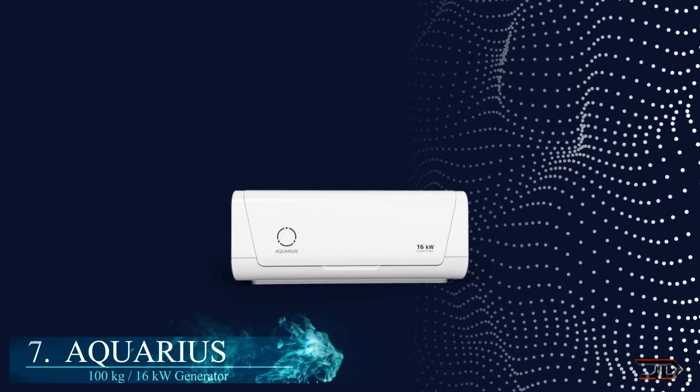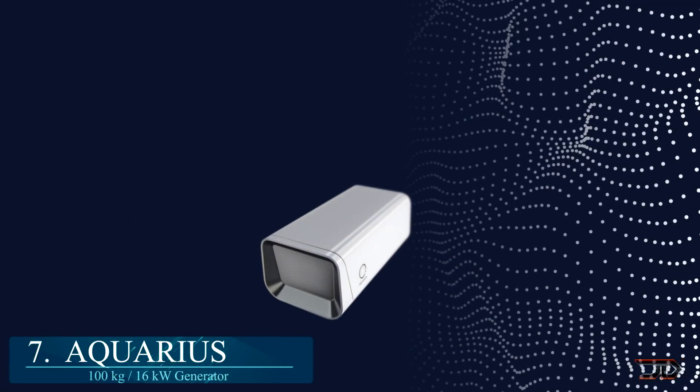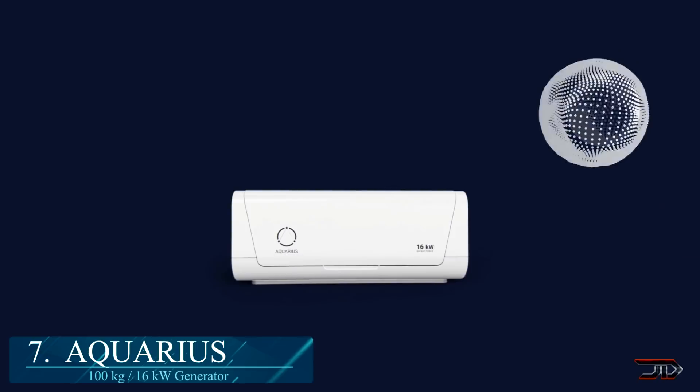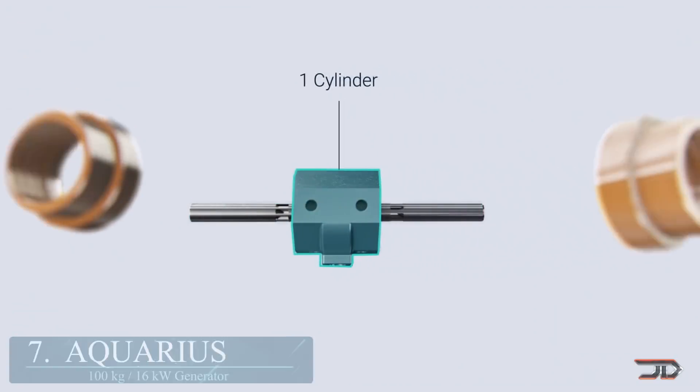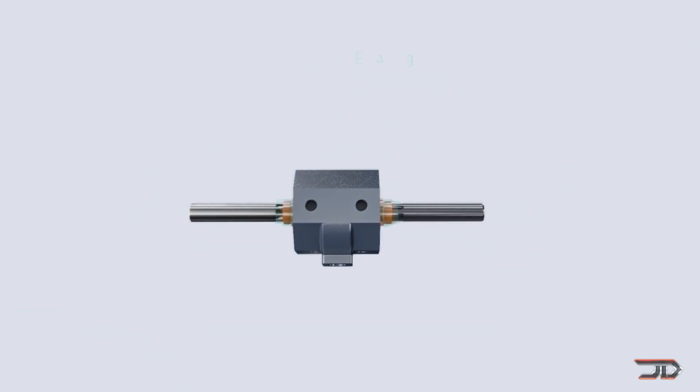At number 7, the Aquarius Generator. This Israel-based company has developed a very impressive two-sided free-piston linear engine.